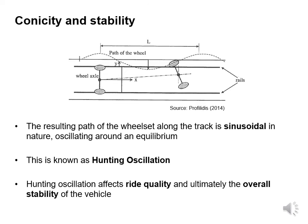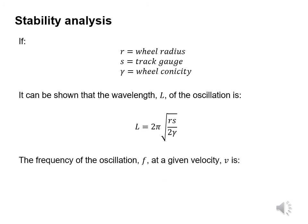For stability analysis, if lowercase r is the wheel radius, lowercase s is the track gauge, and gamma is the wheel conicity, it can be shown that the wavelength L of the oscillation is 2π multiplied by the square root of rs over 2γ. The frequency of the oscillation, lowercase f, at a given velocity v, is the velocity divided by the wavelength.